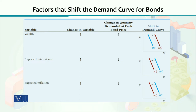सबसे पहले हम देखते हैं कि अगर किसी individual का wealth increase कर गया है, यानि कि उसके sum of all the resources increase कर गये हैं. You can see कि अगर हमारे पास initial demand for the bond blue line से represent हो रही है, तो increase in the wealth से demand curve forward shift कर जाएगा और वो brown line से नजर आ रहा है. अगर wealth fall कर जाएगा, तो demand curve पीछे की तरफ shift करेगा — brown वाला initial हो और नीले वाला fall in the wealth को represent करे.